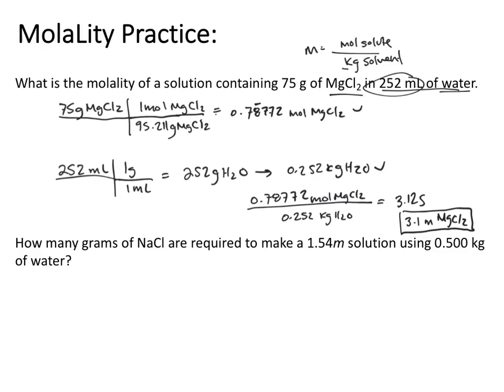How many grams of NaCl are required to make a 1.54 molal solution using 0.500 kilograms of water? We have 1.54 moles of NaCl per one kilogram. Multiplying by half a kilogram, kilograms cancel, giving us 0.77 moles of NaCl.